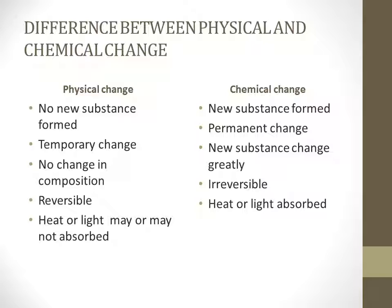The difference between a physical and chemical change: as we have seen the properties, it is simple to identify what are the physical and chemical change properties. No new substance is formed in a physical change, whereas a new substance is formed in a chemical change. A physical change is temporary, while a chemical change is permanent. There is no change in composition in a physical change, whereas in a chemical change a new substance is formed.